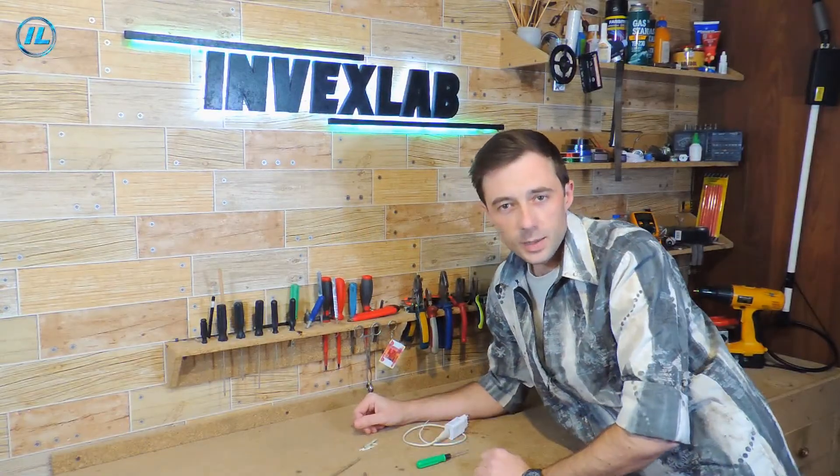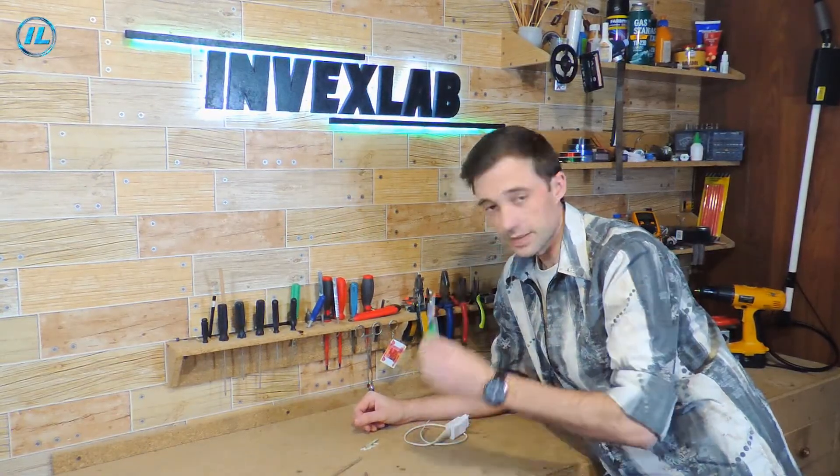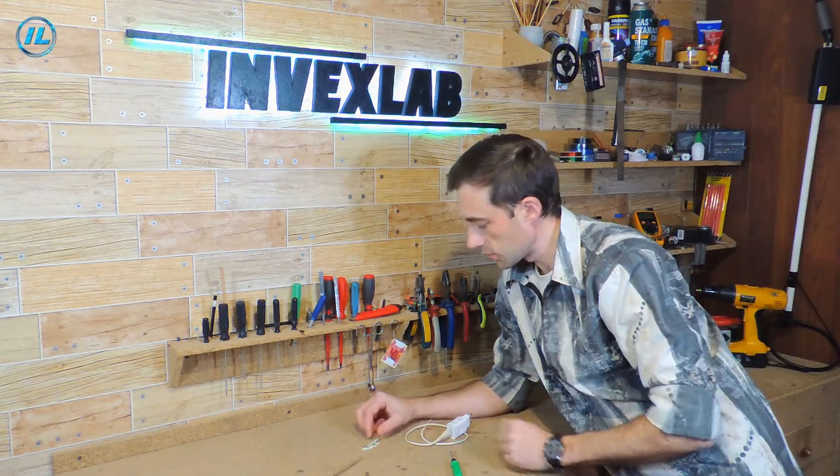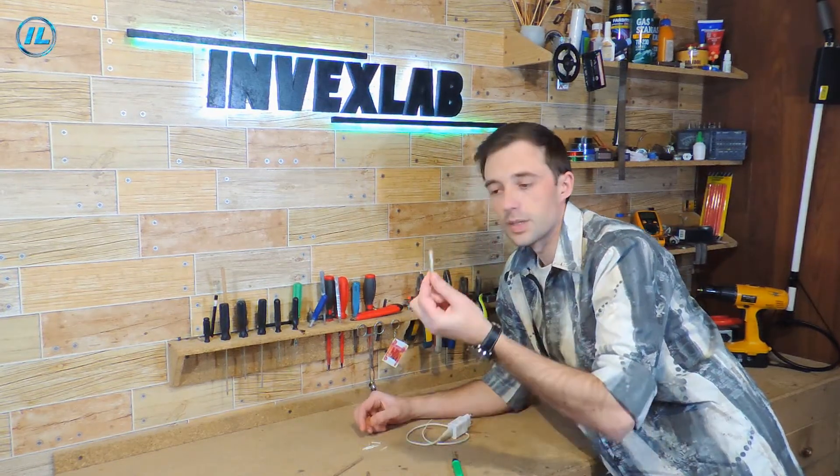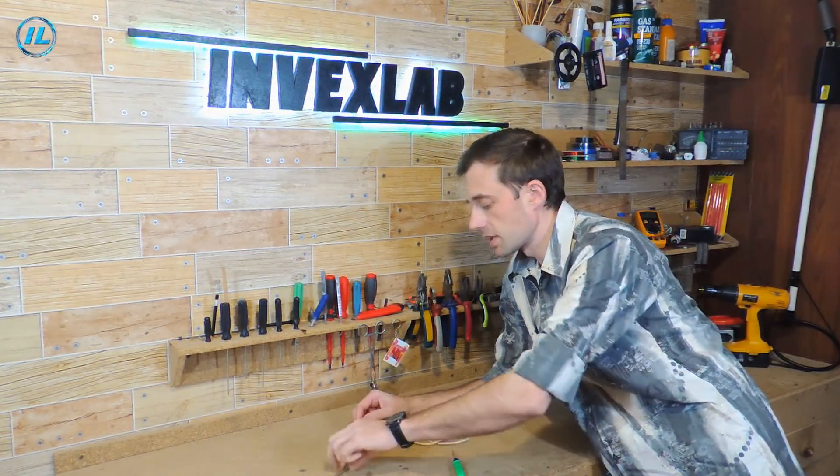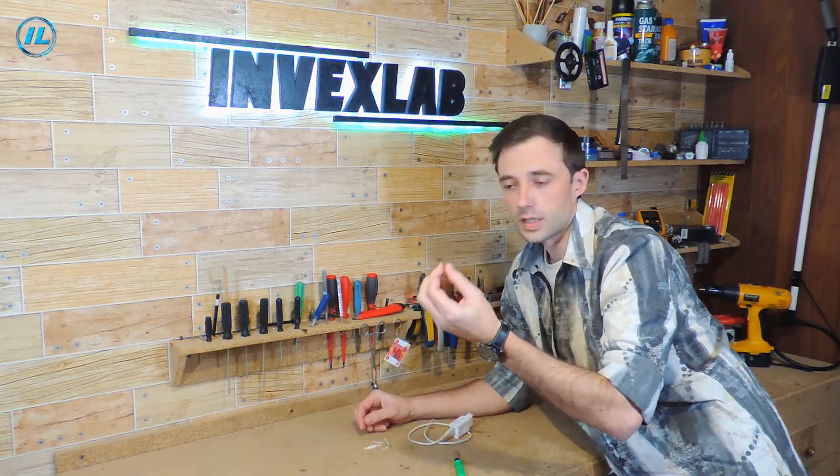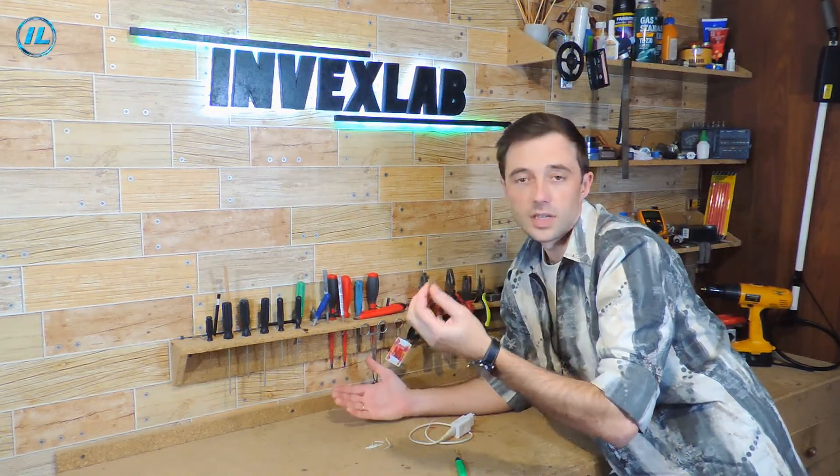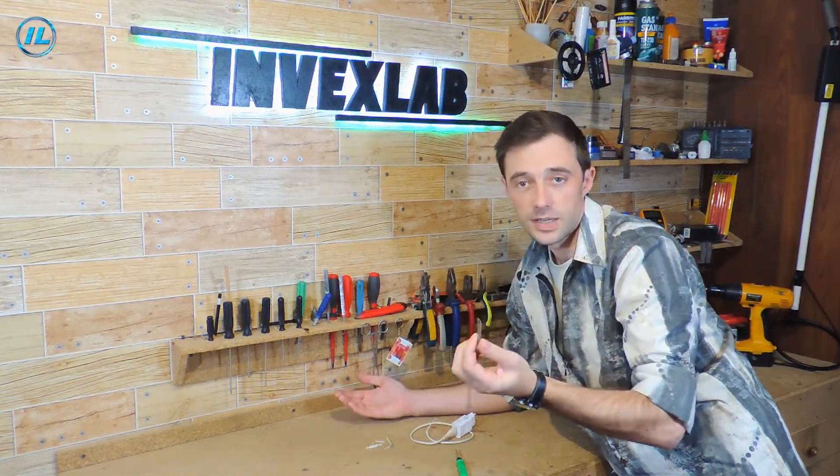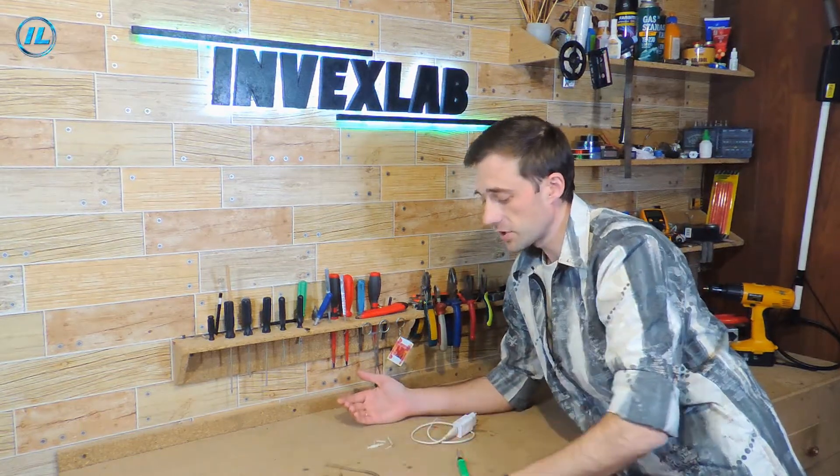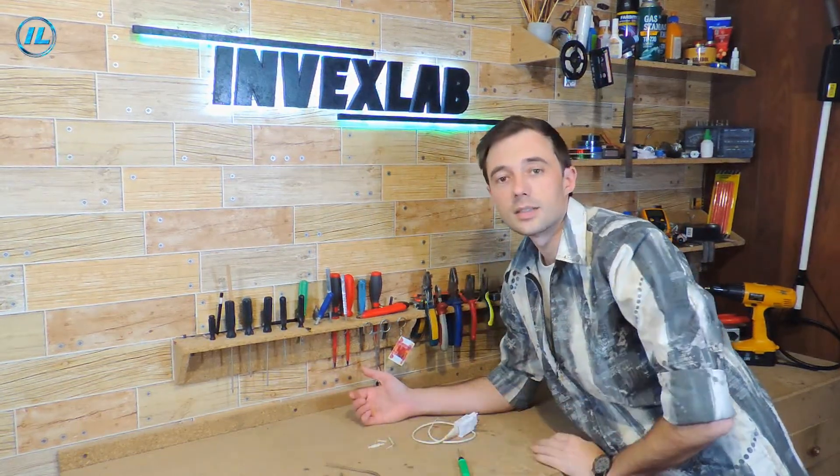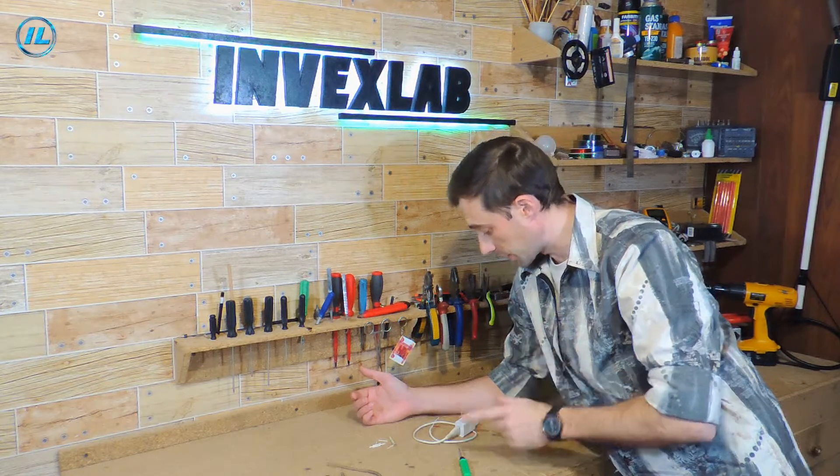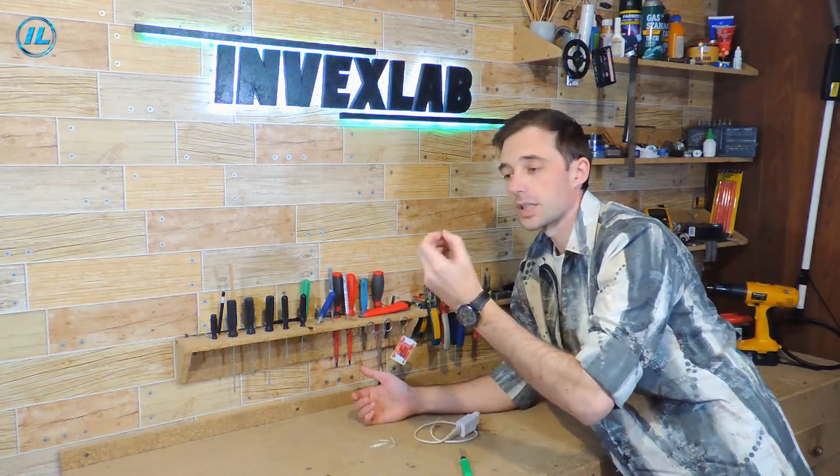To make a soldering iron from a screwdriver, you will need several parts. This, of course, is the screwdriver, charger, fiberglass cables and a piece of nichrome wire. Nichrome wire can be found, for example, in an electric furnace or a non-working hair dryer. If everything is available, you can start assembling the soldering iron.